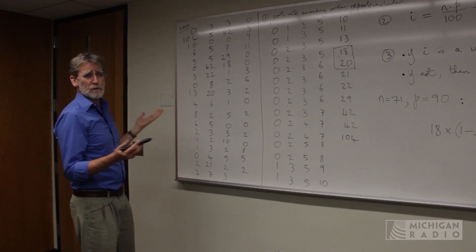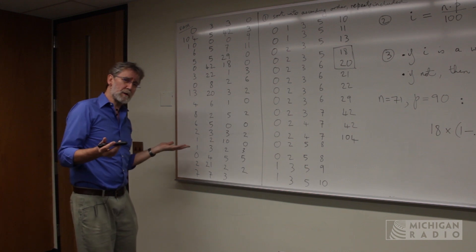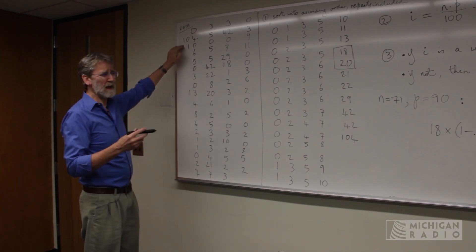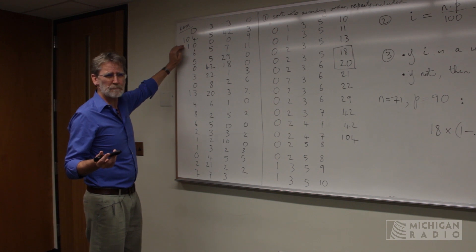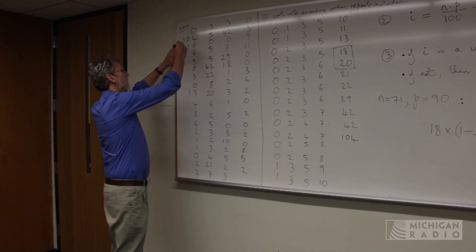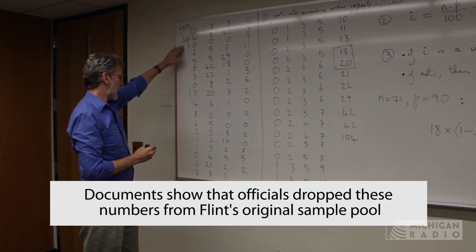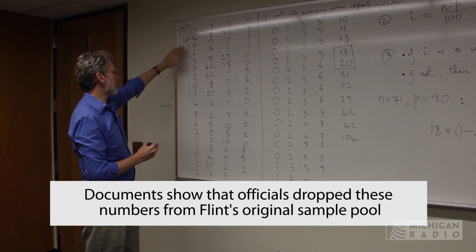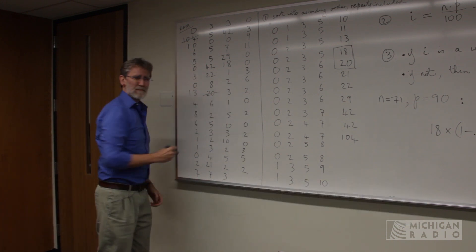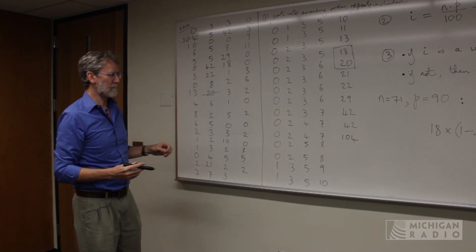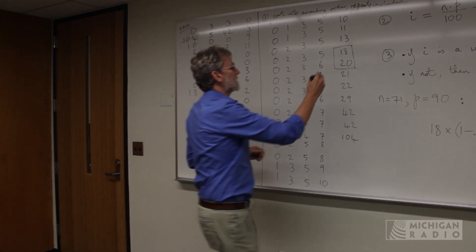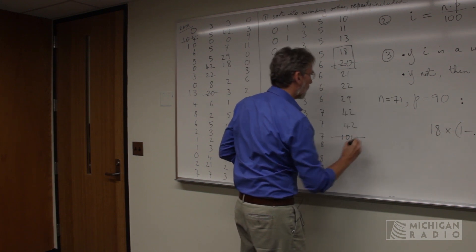Let's suppose, let's just suppose that two of these data values, somehow there's something suspicious about them and we'd like to get rid of them. For whatever reason, we're going to get rid of 104 and we're going to get rid of 20. Something suspicious about those numbers. All right. So I'm going to get rid of 20, get rid of 104.